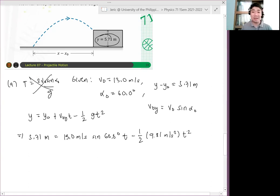So ang gagawin natin, we substitute our y minus y naught. So we have 5.71 meters, which is just equal to v naught y. So what is v naught y? This is simply v naught sine alpha naught, and hence this is just 13.0 meters per second sine 60 degrees times t minus one-half quantity 9.81 meters per second squared times t squared. Okay? Ayun, great! Diba kanina meron tayo ganitong sinunod kanina? Para lang rin siyang quadratic equation, diba?